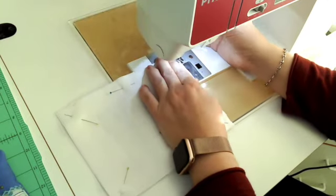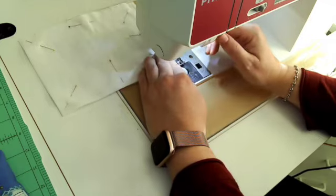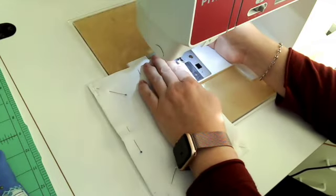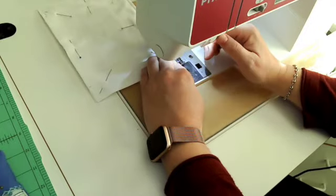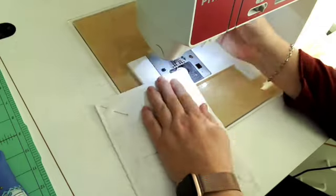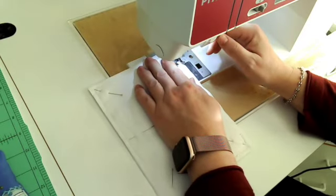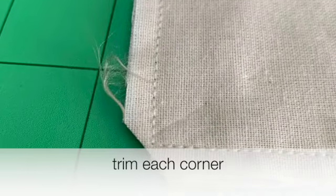Starting at one of the marks that I made I'm going to start with a back stitch and I'm going to sew around the entire page. Making sure that I back stitch at each corner. Miter each corner.